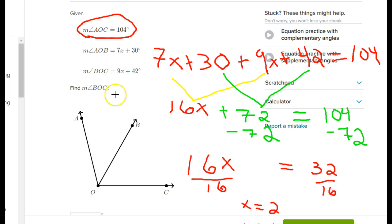But what the question is asking me is what is the measure of BOC. BOC was given as 9 times x plus 42 degrees. So I have to take 9 times x, and x is 2, so 9 times 2—that's 18—plus 42, which is going to make this 60 degrees. And that's going to be my answer. You need your calculator to help you out with all this stuff, with the division.